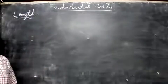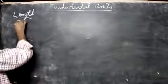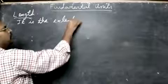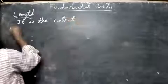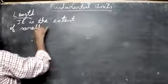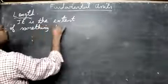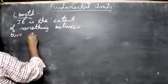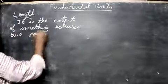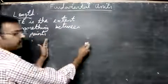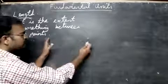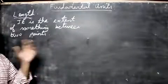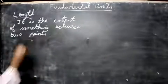It is the extent of something between two points. So if you take two points here like this, for example, then this extent or this distance is called as length. So let's see what is the SI unit of length and how to measure it.